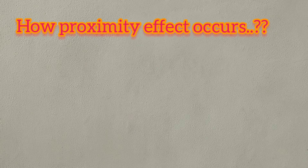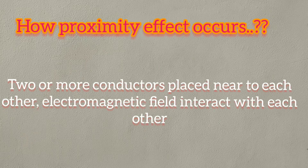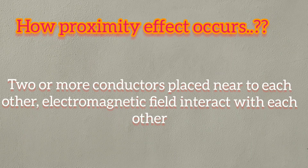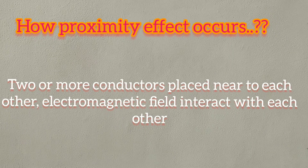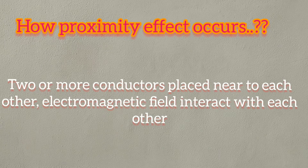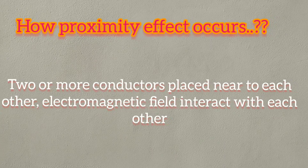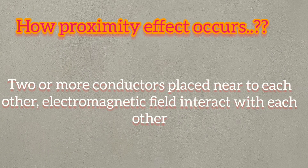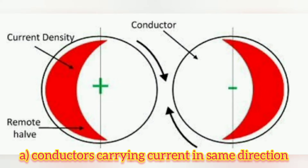Now the question is how proximity effect occurs. When two or more conductors are placed near to each other, their electromagnetic fields interact with each other. Due to this interaction, the current in each of them is redistributed such that the greater current density is concentrated in the part of the strand most remote from the interfering conductor. In the first case, if conductors carry current in the same direction, the magnetic field of the halves of the conductors which are close to each other cancel each other, and hence no current flows through that half portion. The current is crowded in the remote half portion of the conductor.